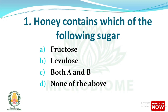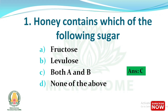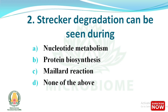The first question: honey contains which of the following sugars? The options are fructose, levulose, both A and B, none of the above. The right answer is option C, both A and B — fructose and levulose. Next question: sugar degradation can be seen during which reaction? The right answer is option C, the Maillard reaction — an organic chemical reaction where reducing sugars react with amino acids to form a complex mixture of compounds, responsible for the characteristic flavor and aroma of browned food.